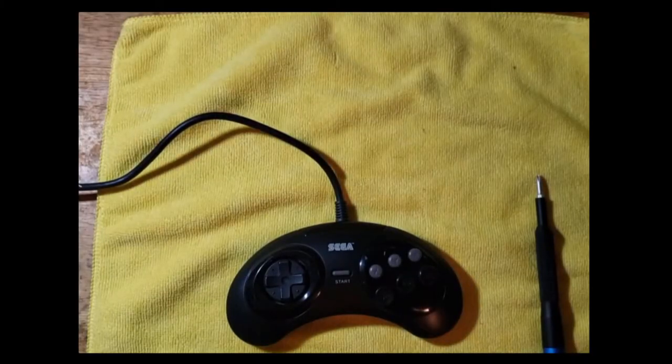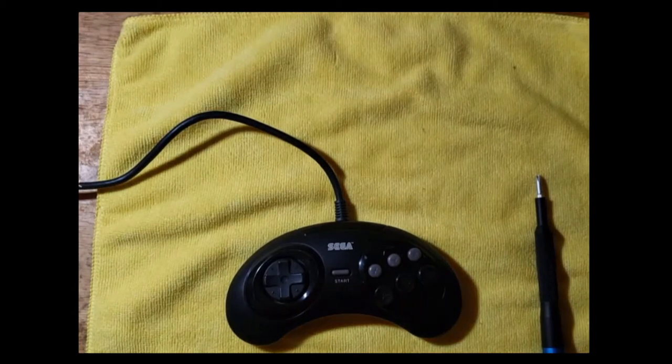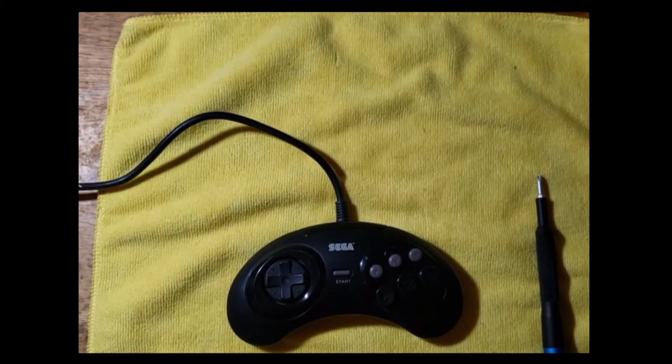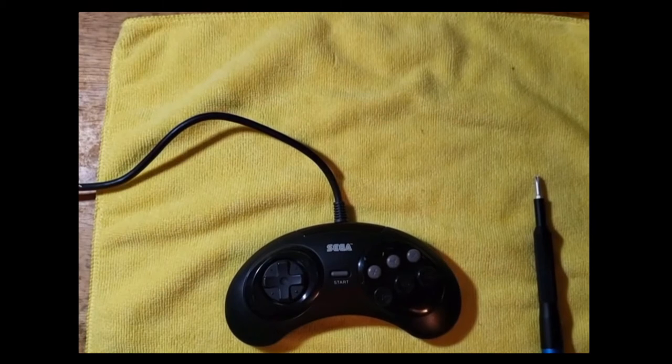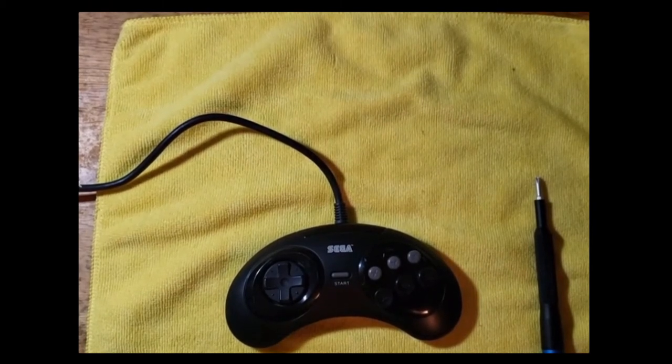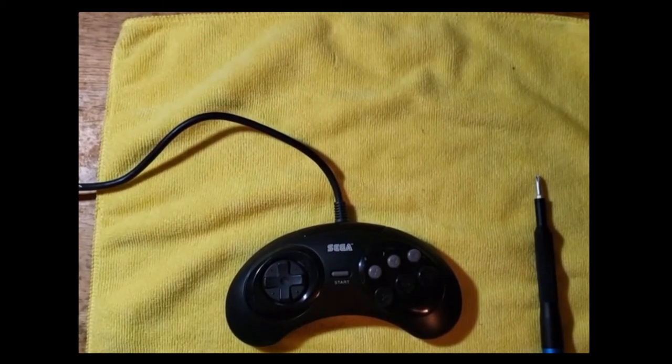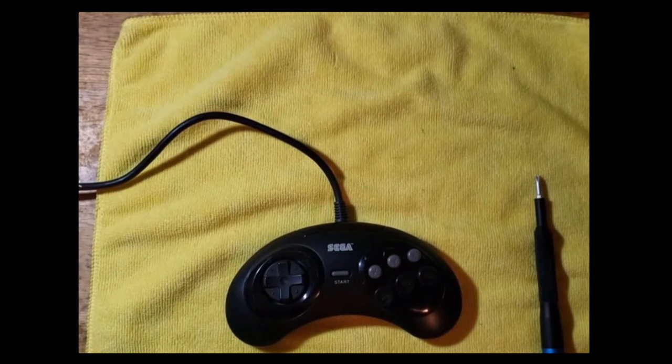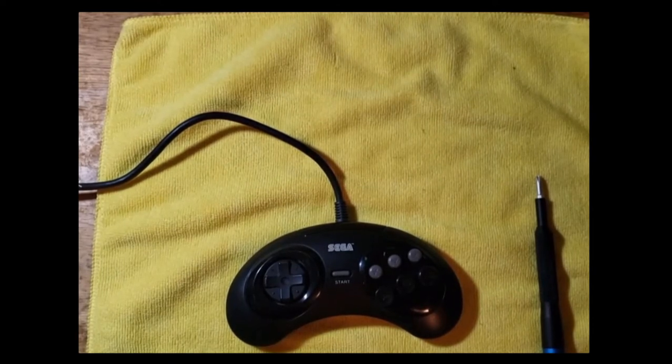Hey everyone, welcome to Running Retro. Today we're going to be going through the process of disassembling and reassembling a Sega Genesis six-button controller. Now a three-button controller is the same process, it's just that you don't have to worry about the top three buttons.